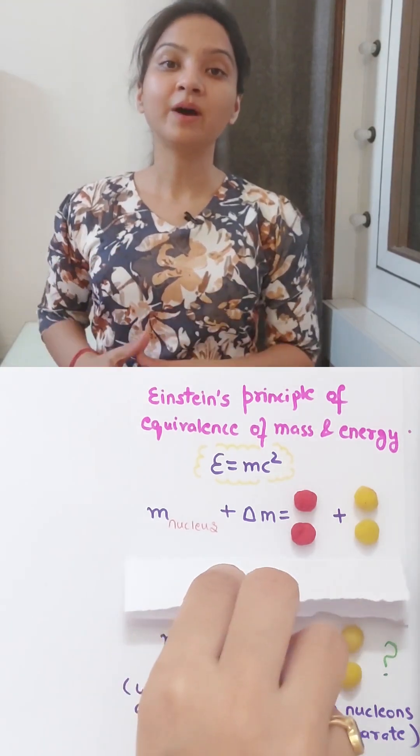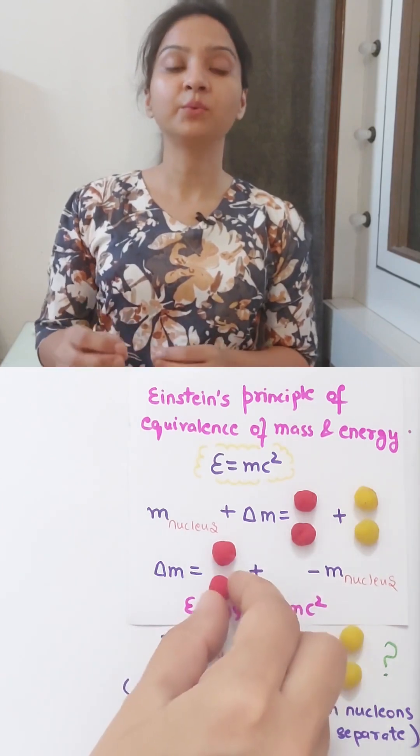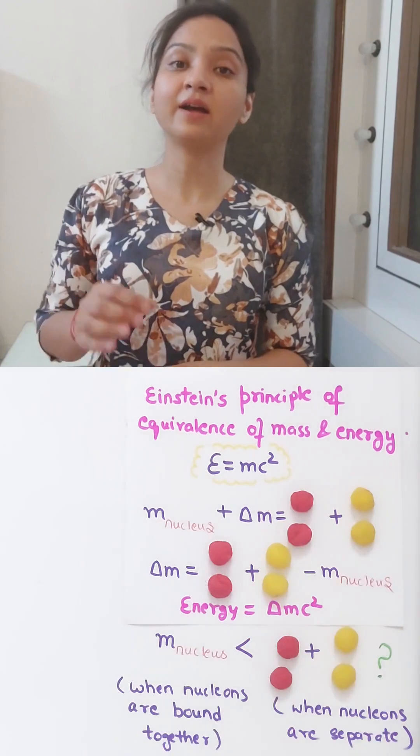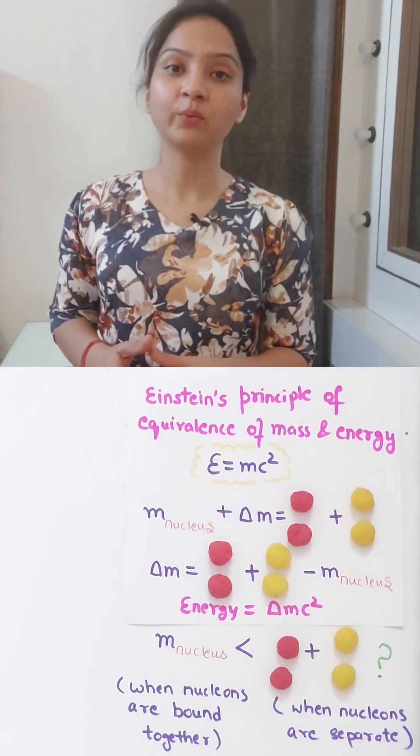So nuclear mass defect is the difference between the sum of the masses of individual neutrons and protons present in the nucleus and the actual mass of the nucleus. That means that mass defect is always positive.